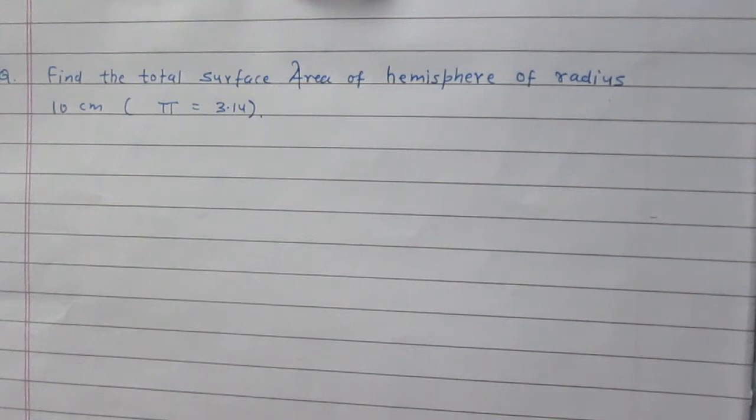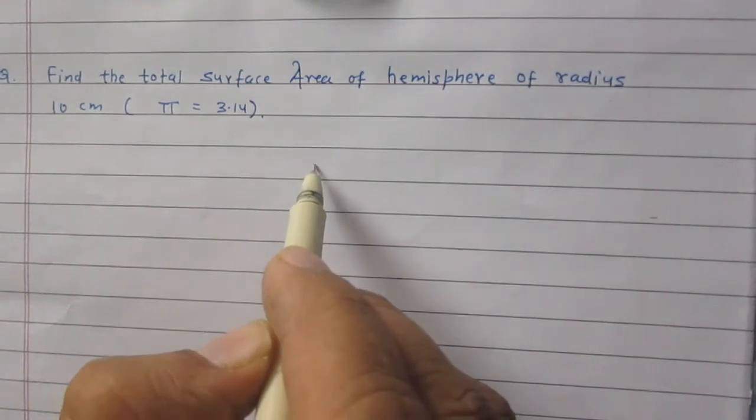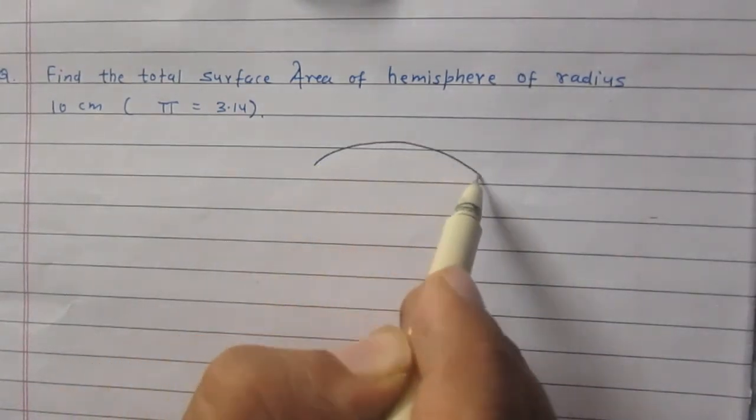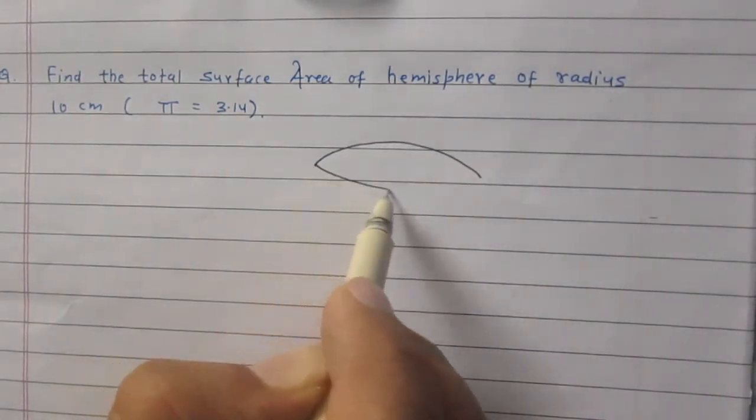Find the total surface area of hemisphere of radius 10 cm. We are asked to find the total surface area of hemisphere. The shape of hemisphere is just like half of a sphere.